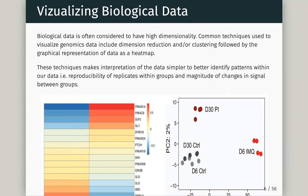We can use some really common techniques to visualize our genomics data, which include things like dimension reduction or clustering. We can simplify our data to the major patterns of expression — that would be dimension reduction. Or we can cluster our data — find genes which have similar patterns of expression across samples. They are up in one sample group, down in all the others. We can cluster those genes together and make our life of interpretation that much easier.